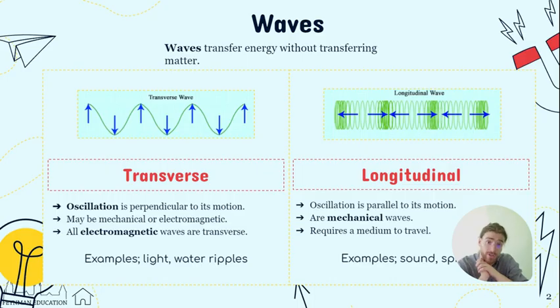When it comes to longitudinal, it oscillates parallel to its motion. They are going to be mechanical waves and they require a medium to travel through. Transverse waves do not require medium, they don't need particles to travel, like light can be in a vacuum of space. Longitudinal waves require medium—they require a gas, a liquid, or a solid. They need particles to pass on their energy.